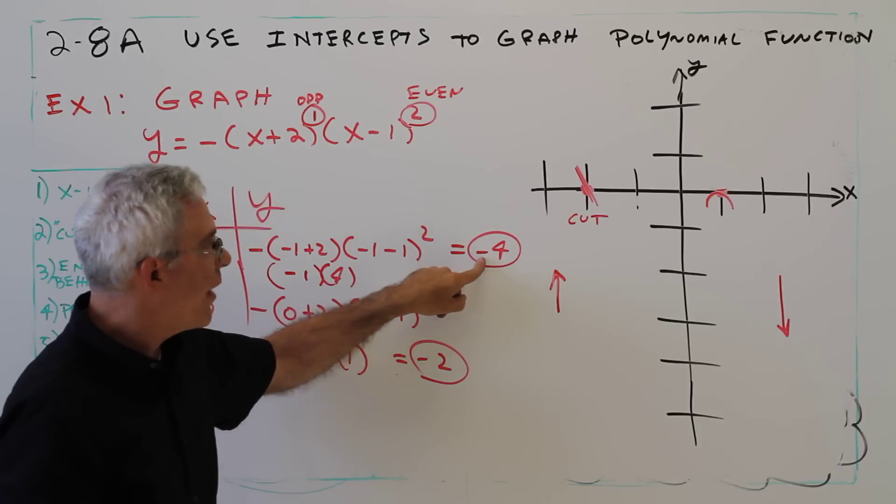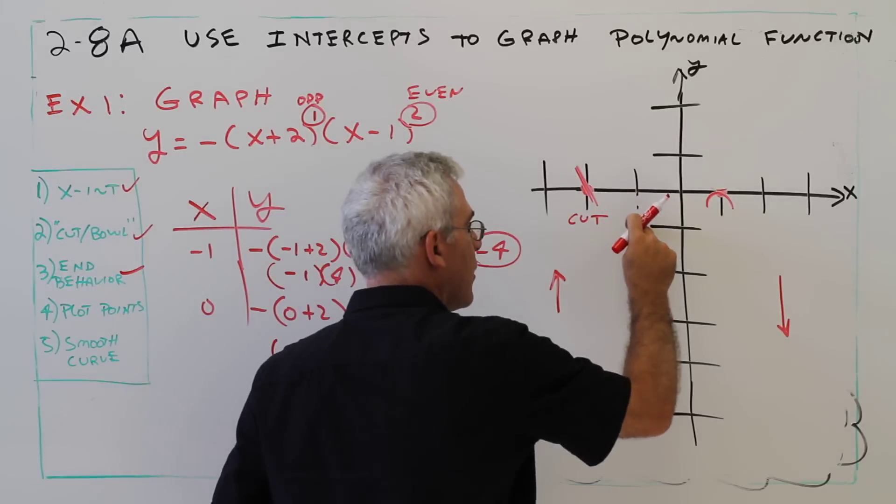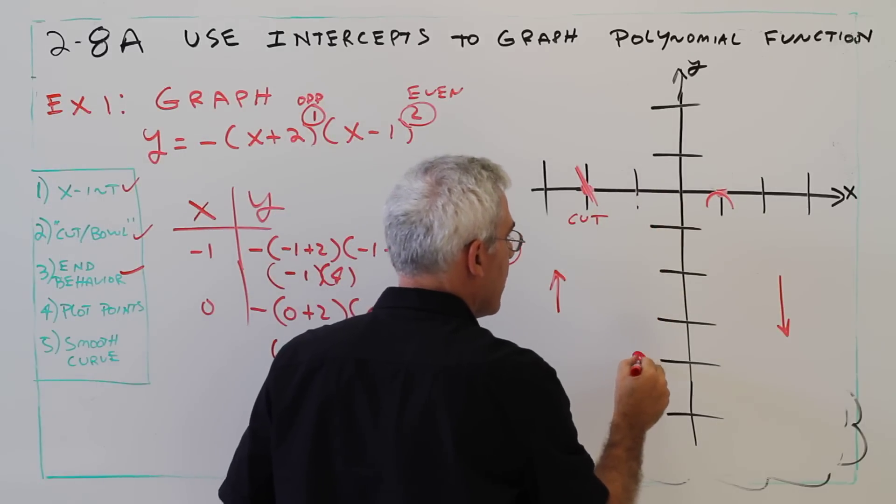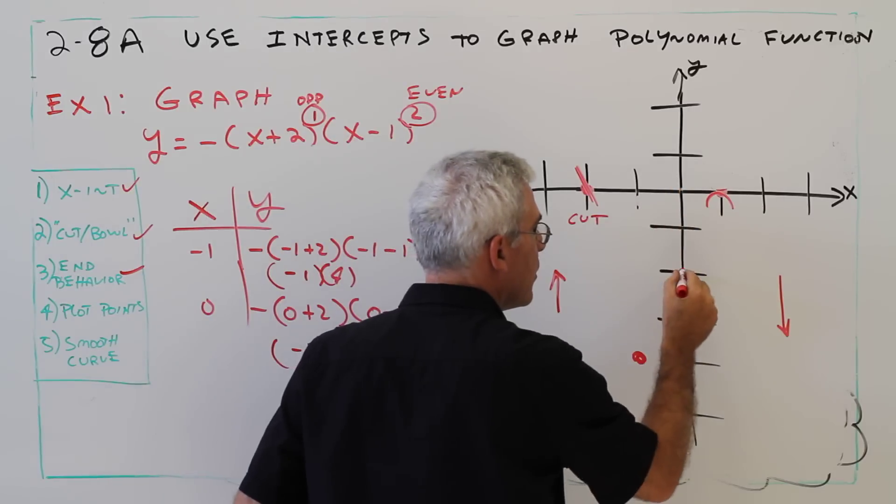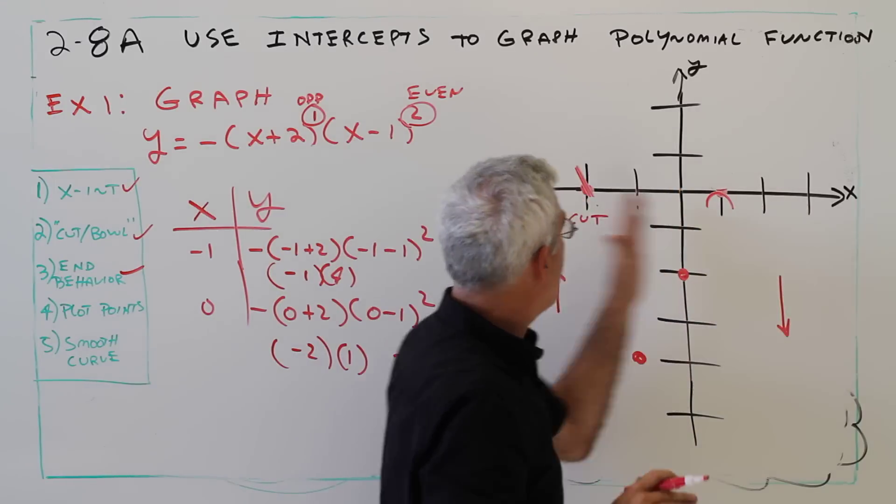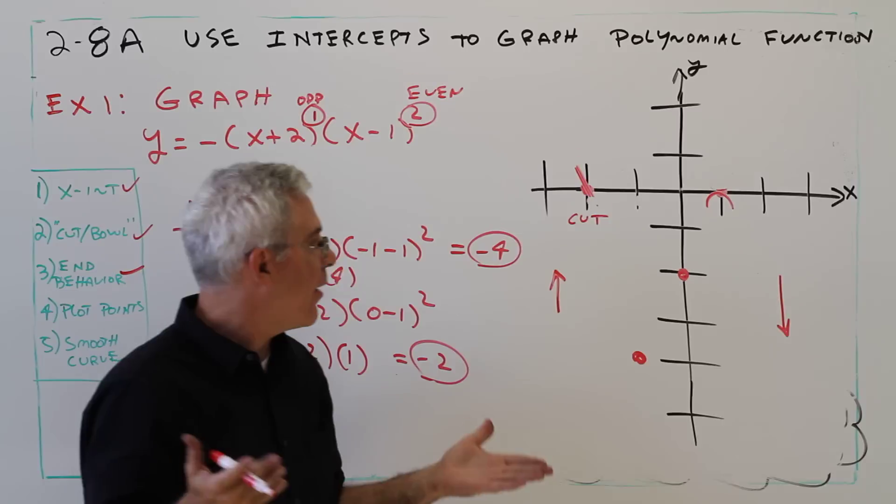Negative 1 by negative 4 and 0 by negative 2. I don't need to worry about plotting points out here. The end behavior will help me out there.